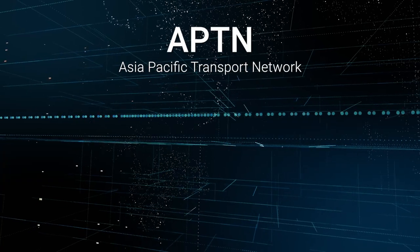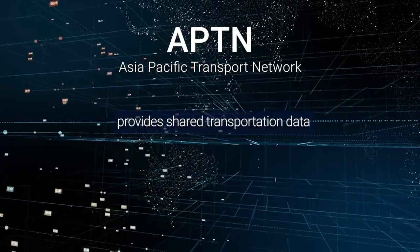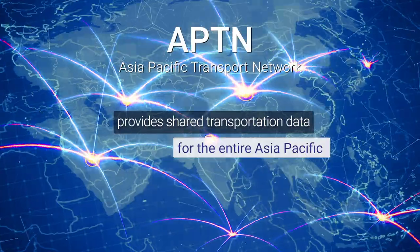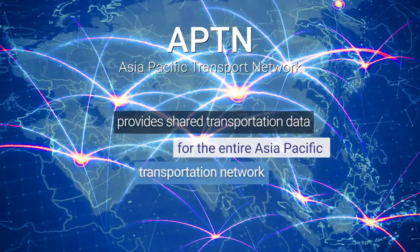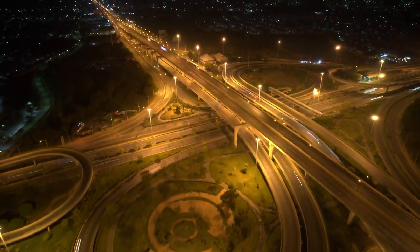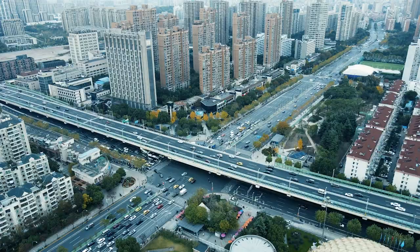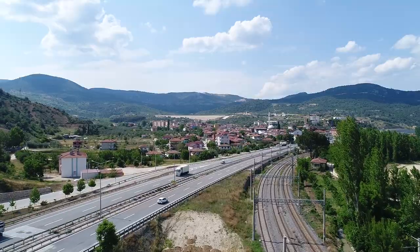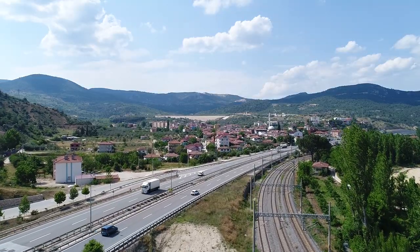APTN provides shared transportation data for the entire Asia-Pacific transportation network, with the objective of being a key data resource for coordinating activities on regional transport connectivity.